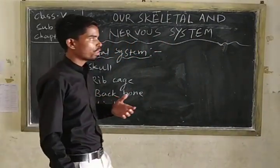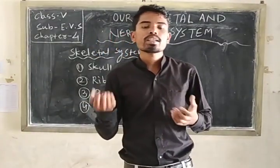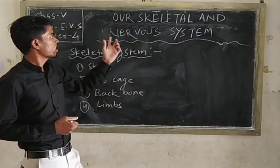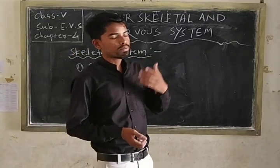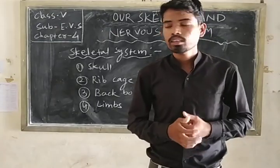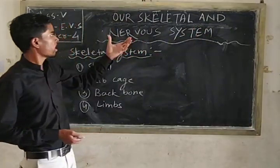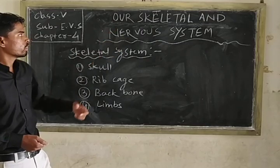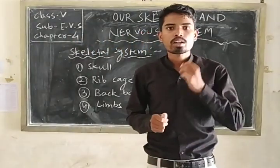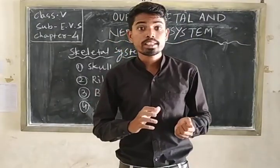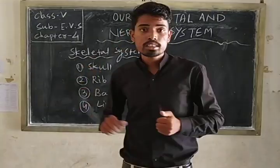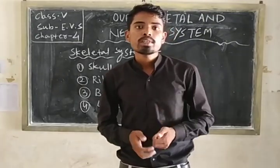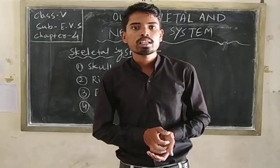Students, we know about our body. In our body there are different bones and different types of nervous system. The skeletal system mainly protects our body, and the nervous system controls our body.